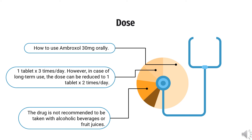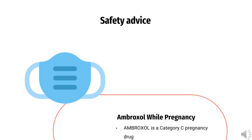Dosage may differ for each patient depending on health condition and the purpose of treatment. Normally, the recommended dose for adults and children is 1 tablet three times per day. However, in cases of long-term use, the dose can be reduced to 1 tablet two times per day.